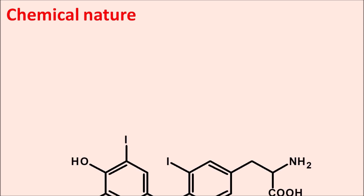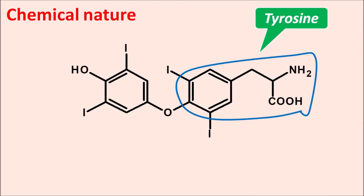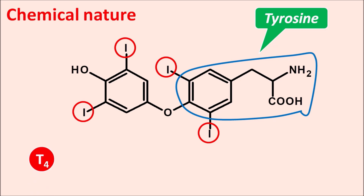Regarding the chemical nature of levothyroxine: its structure contains a tyrosine moiety, since thyroid hormones are made up of tyrosine residues. We can also identify four iodine moieties within the structure — that is why it is represented as T4, a tetraiodo derivative of thyroid hormones.